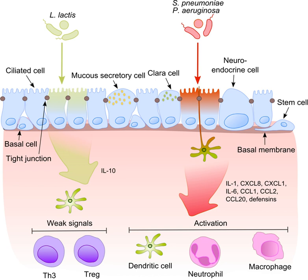On the other hand, Prevotella, Mesorhizobium, Microbacterium, Micrococcus, Valonella, Rhizobium, Stenotrophomonas, and Lactococcus are present mostly in healthy individual cohorts. The relative abundance of proteobacteria is increased in asthmatic children. Pseudomonas aeruginosa, Staphylococcus aureus, and Burkholderia cepacia are found most often in cystic fibrosis patients.